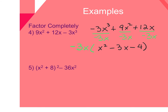Now I can factor that trinomial — it is factorable. I need factors of negative 4 that combine to give me negative 3. Those factors are negative 4 and positive 1. So I rewrite the GCF, and this trinomial factors into x minus 4 and x plus 1. You can always go back and multiply your final answer to check it goes back to the beginning.